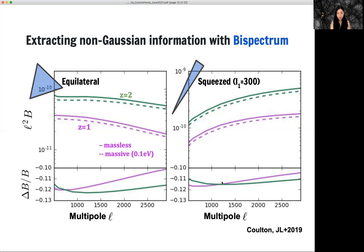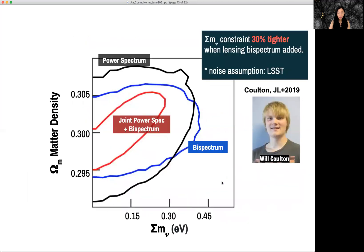If we translate this signature to the cosmological constraints, we get this contour. This is work led by Will Colton and we're showing a parameter constraint in the omega m and the neutrino mass contour.